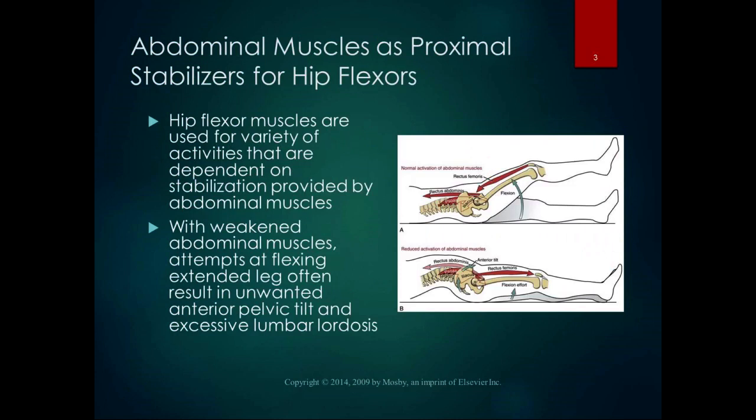The abdominal muscles act as proximal stabilizers for the hip flexors. We need proximal stability for distal mobility. With weakened abdominal muscles, if you're lying supine and attempt to flex the hip and raise your leg, the result is often an unwanted anterior pelvic tilt and excessive lumbar lordosis. We're going to try this in lab to see what muscles we have to activate to prevent that lumbar lordosis — the abdominal muscles really have to be activated to prevent that anterior pelvic tilt.